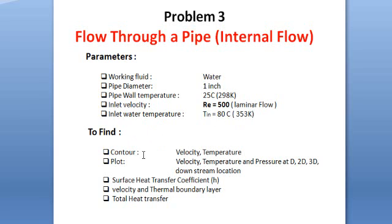We have to find the contour for velocity and temperature, the velocity, temperature and pressure distribution along the pipe, surface heat transfer coefficient, velocity and thermal boundary layer, and total heat transfer.